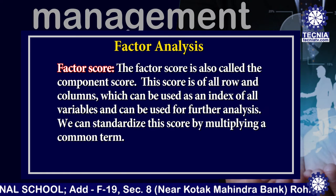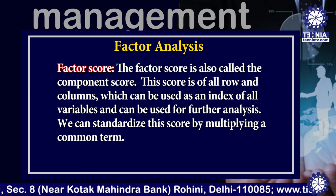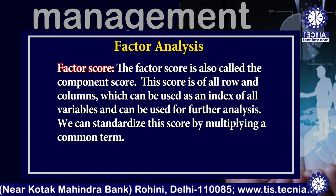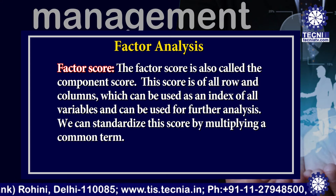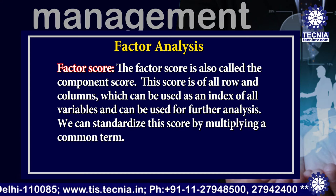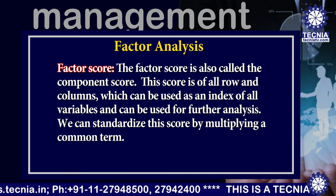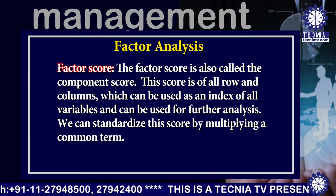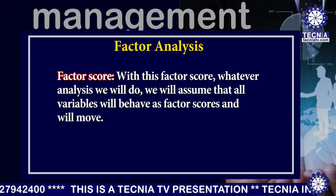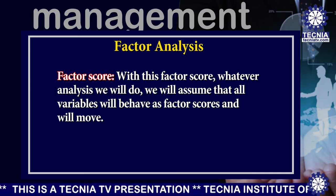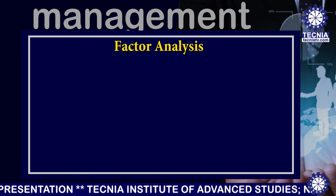The factor score is also called the component score. This score covers all rows and columns, which can be used as an index of all variables and can be used for further analysis. We can standardize this score by multiplying a common term. With this factor score, whatever analysis we will do, we will assume that all variables will behave as factor scores and will move together.